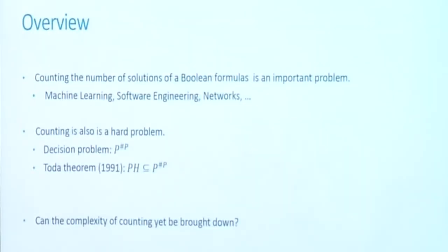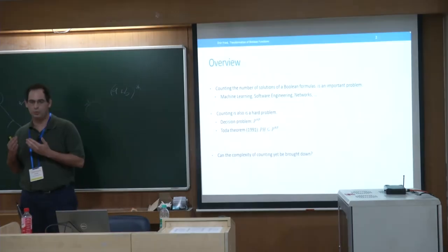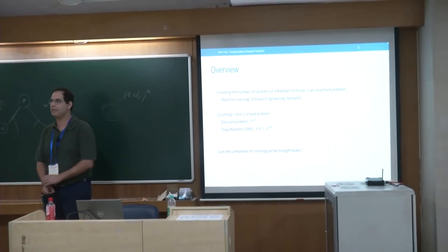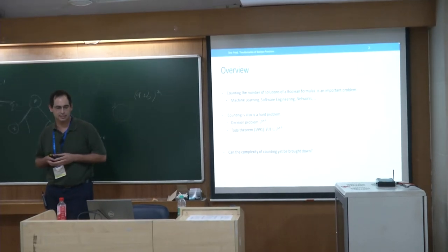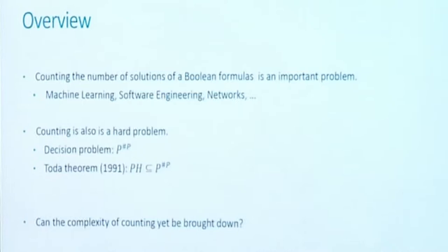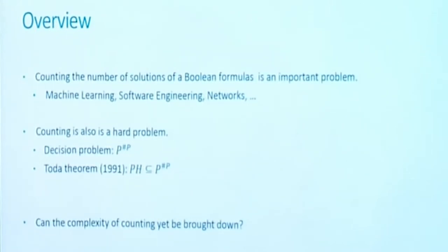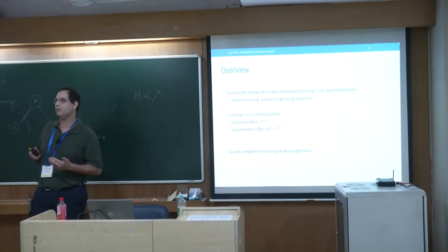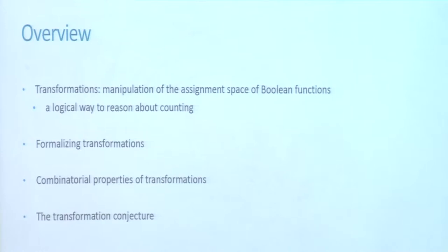Counting is also a very hard problem. The decision variant — given a formula and a number, whether the number of solutions is at most that number — is P-to-the-sharp-P hard, which means it is contained in PSPACE but contains the polynomial hierarchy. This is basically Toda's theorem from 1991. Although we have this theorem, there is little we know about the world of complexity classes, and we can always ask whether the complexity of counting can be brought down. In this talk, I want to look at another angle to reason about the complexity of counting.